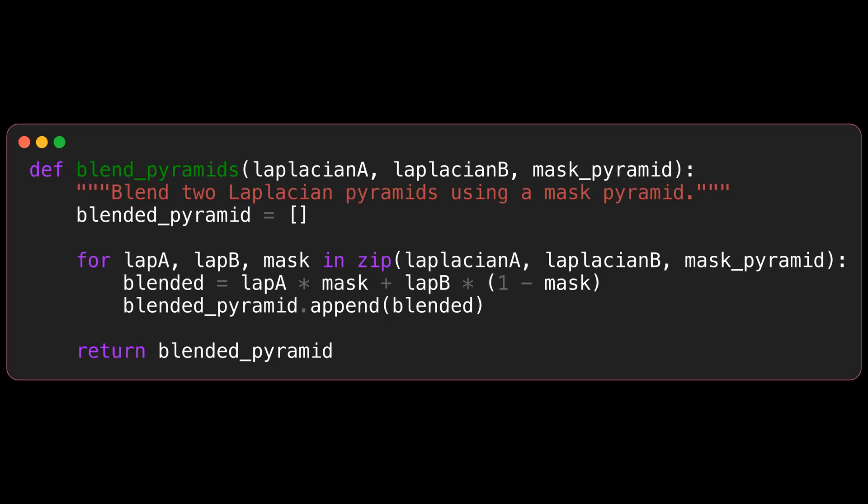Now we have the Laplacian pyramids for the two images. We can blend them together. Here, for each level, we perform a simple linear combination of the two images according to the mask. This gives us a blended Laplacian pyramid.